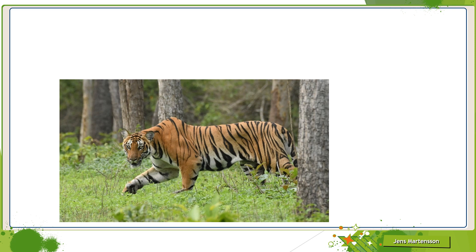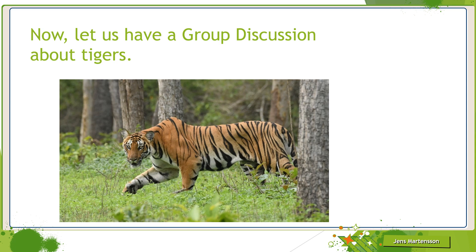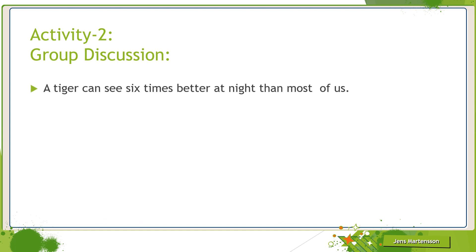Now we will have a group discussion about this animal, tiger. The first point is, a tiger can see six times better at night than most of us. The power of this tiger's eyesight is six times better at night. The eyesight of the tiger is exceptionally good, particularly at night — the eye has been designed to see very well in the dark. In normal daylight, the tiger sees about as well as we do, but without the detail that we can enjoy. At night, their vision is about six times better than that of a human being.